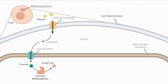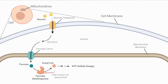Pyruvate can enter the mitochondrion and is acted on by the enzyme pyruvate dehydrogenase, which turns pyruvate to acetyl-CoA. Acetyl-CoA is a precursor molecule for cellular energy, so if the cell has a lot of it, it can generate a lot of energy. Because of the high concentrations of acetyl-CoA, the drive of pyruvate dehydrogenase to generate more acetyl-CoA is low.